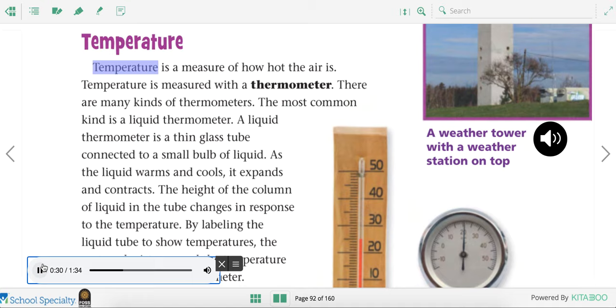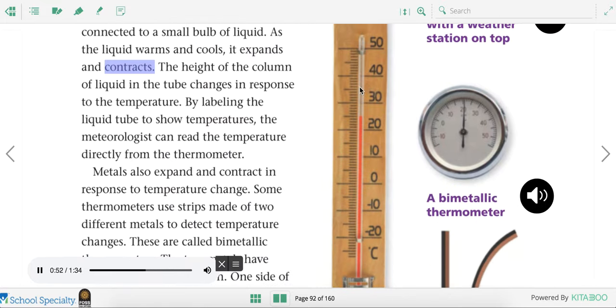Temperature is a measure of how hot the air is. Temperature is measured with a thermometer. There are many kinds of thermometers. The most common kind is a liquid thermometer. A liquid thermometer is a thin glass tube connected to a small bulb of liquid. As the liquid warms and cools it expands and contracts. The height of the column of liquid in the tube changes in response to the temperature. By labeling the liquid tube to show temperatures, the meteorologist can read the temperature directly from the thermometer.